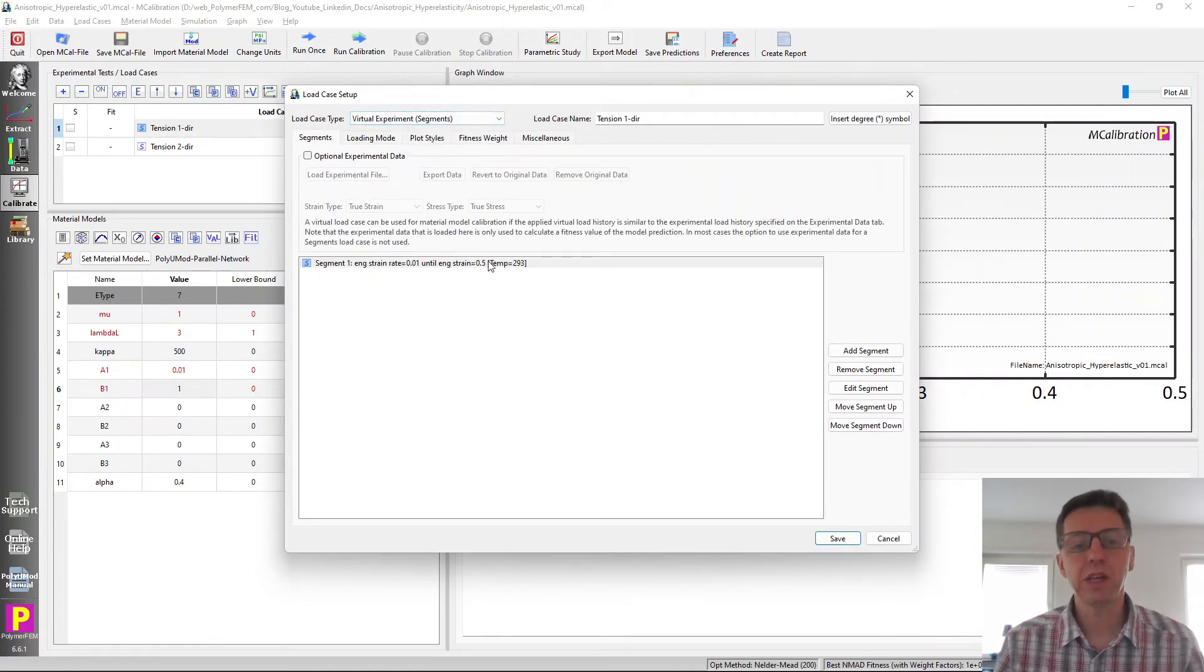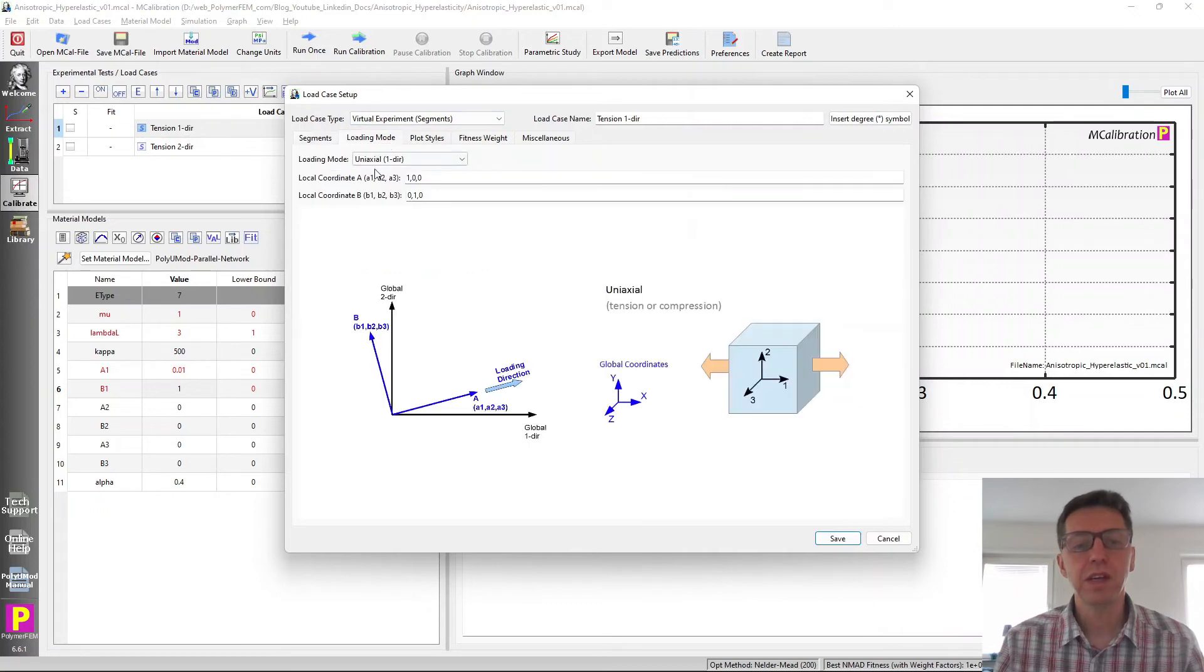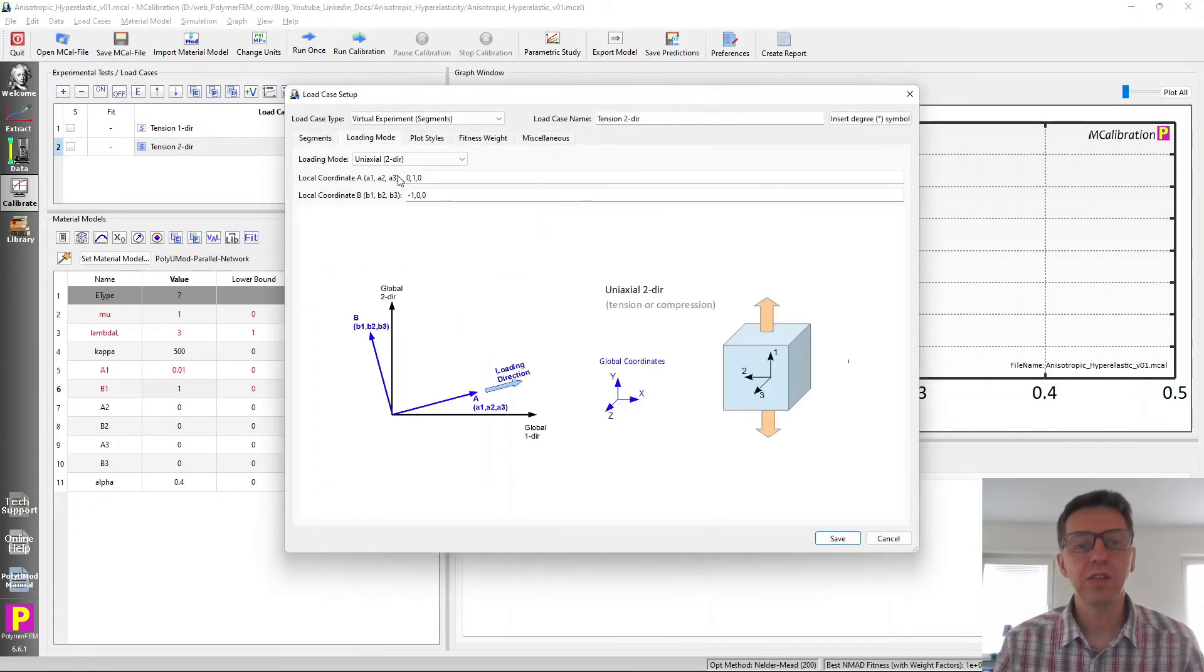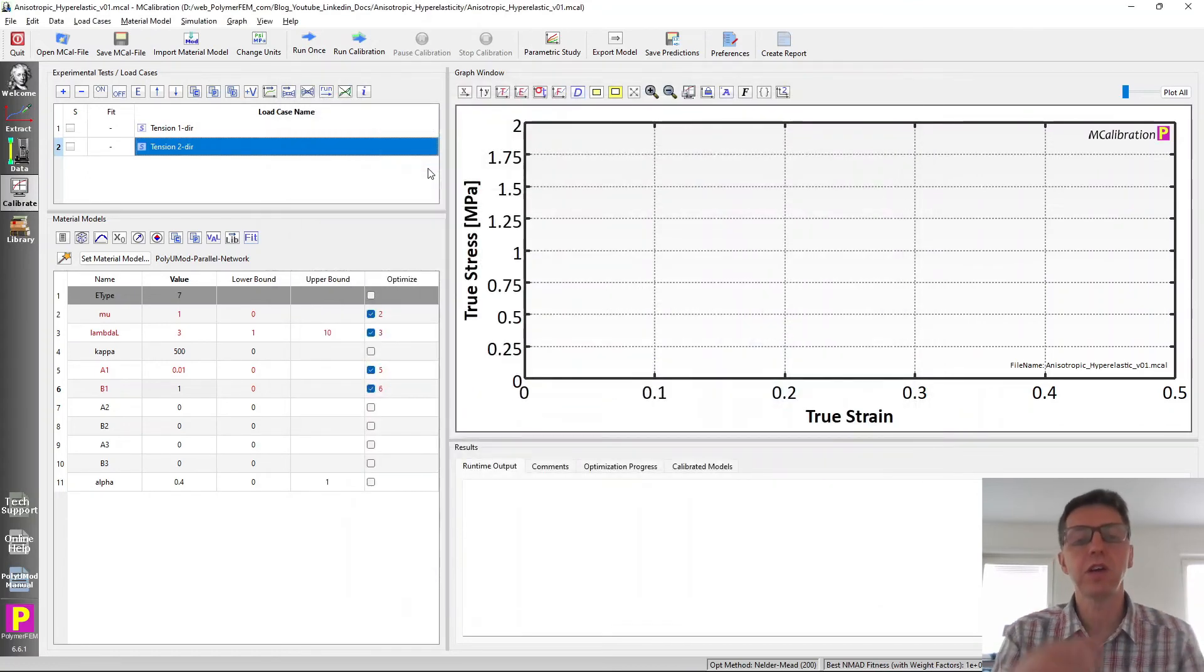I'm loading it to 50% strain in the one direction. The other load case here is in the two direction. So these are two orthogonal directions that I'm going to make a virtual tension test in. And then here's the material model.